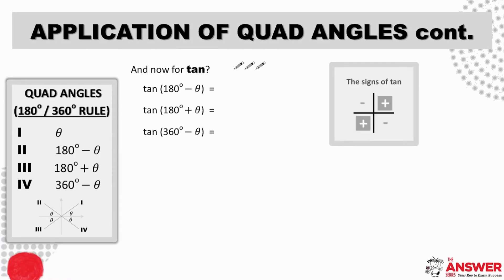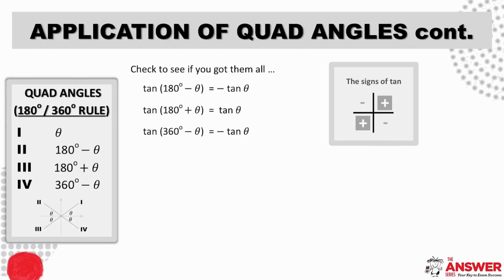And now to complete the picture, let's do the same process for tan. Remember where tan is positive and where tan is negative. Pause the video for a moment now to jot down the reduction of these three tan ratios. So, to confirm, tan is positive in the third quad, where x and y are both negative. And tan is negative in the second and fourth quad, where x and y are opposite in sign.